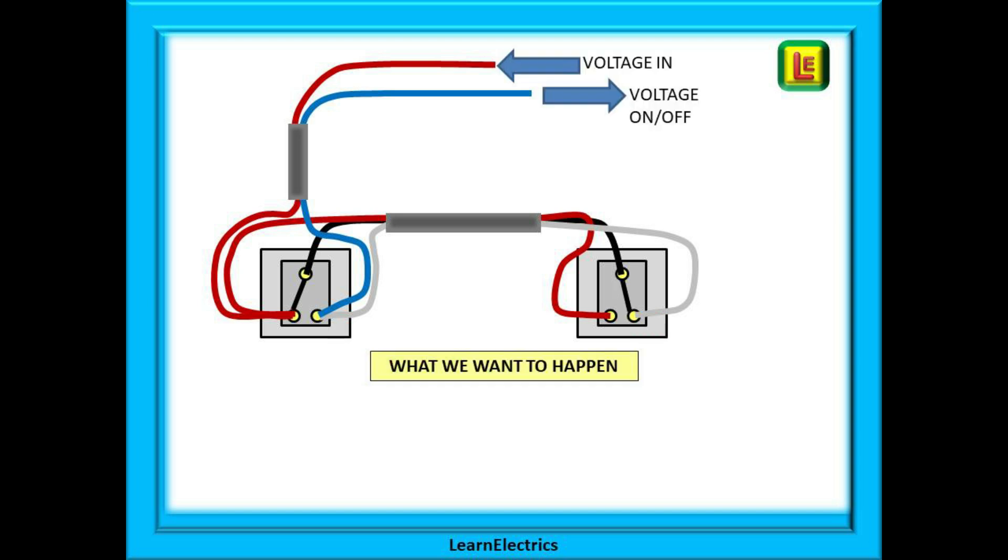What do we want to happen? If we have a voltage going into the circuit, then operating the switches will turn the output voltage on and off, and that's it. We can follow the voltage around the circuit, and we've used dotted lines to show that a particular cable is energized with voltage.